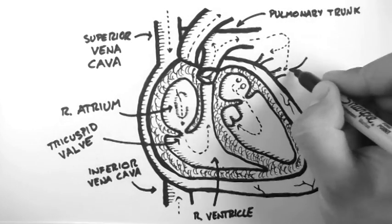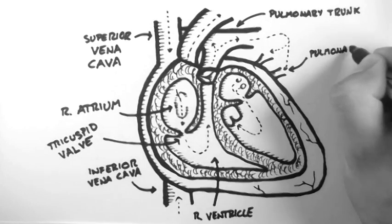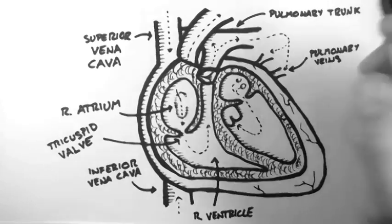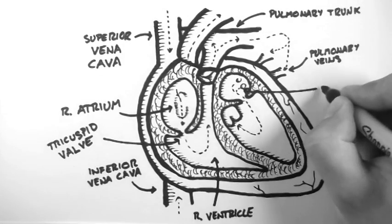Then returning from the lungs, it enters the next chamber via the pulmonary veins. And this chamber it enters is the left atrium.